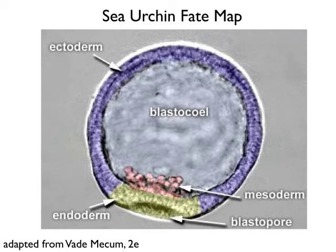Eventually the embryo hatches out of its fertilization envelope by secreting enzymes, and at the blastula stage the skeletogenic mesoderm moves to the interior by ingression. The yellow-colored cells that will form the gut rudiment remain at the vegetal pole. You can see a little dimple there — that's the blastopore, the opening around which cells move as they are internalized during gastrulation. The interior fluid-filled cavity is called the blastocele.